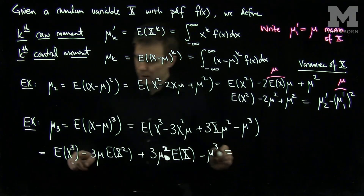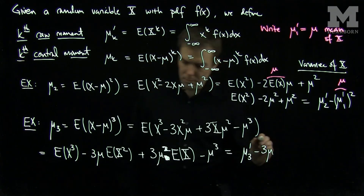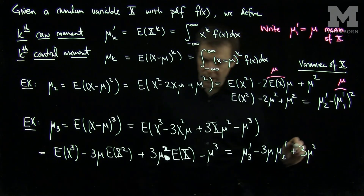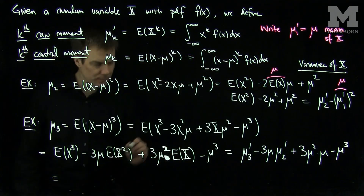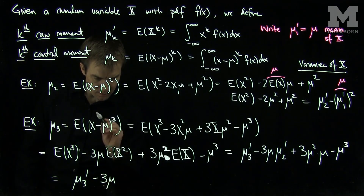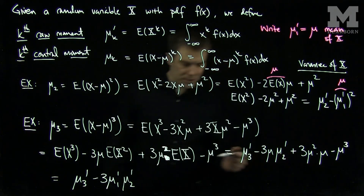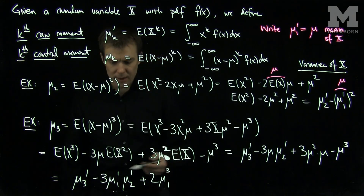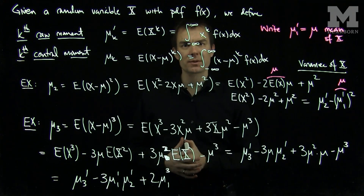This is equal to: the expected value of x cubed is just mu_3 prime, the third raw moment. Then I have minus 3 mu times the second raw moment, plus 3 mu squared times mu, so another mu, minus mu cubed. Simplifying, this will be the third raw moment of x, minus 3 times the first raw moment times the second raw moment, plus 2 times the first raw moment cubed. So anytime we wish to compute a central moment of a random variable, we can write it in terms of powers of the raw moments. Thank you very much.